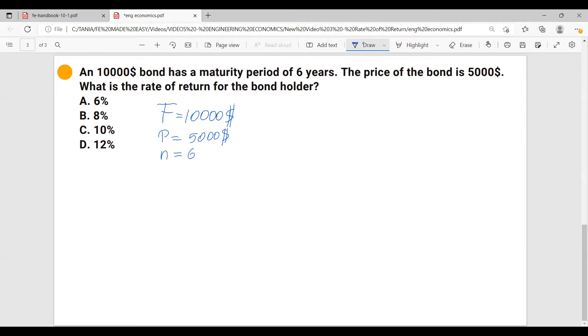So this problem becomes a converting problem. We can either convert a future amount to present or a present amount to future. It's up to you. And from that formula, we'll have to get the interest rate, which is going to be the rate of return.